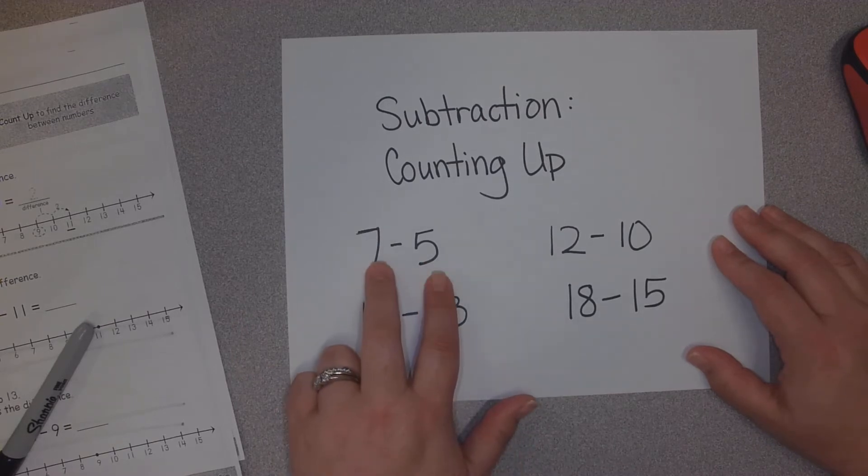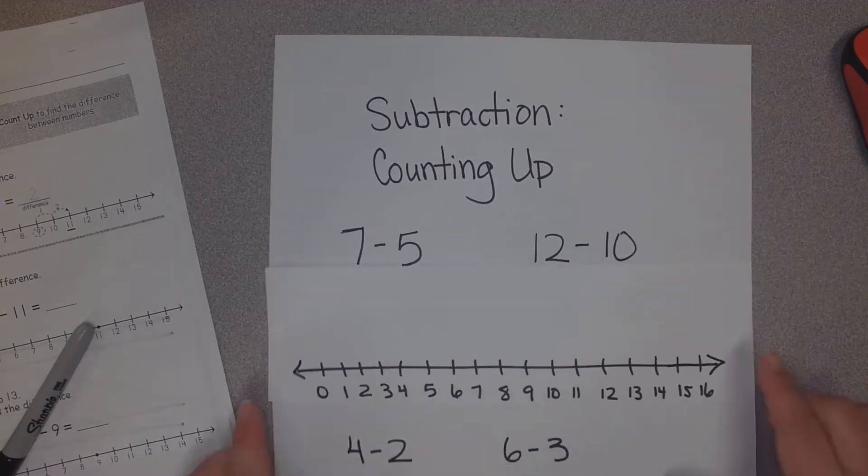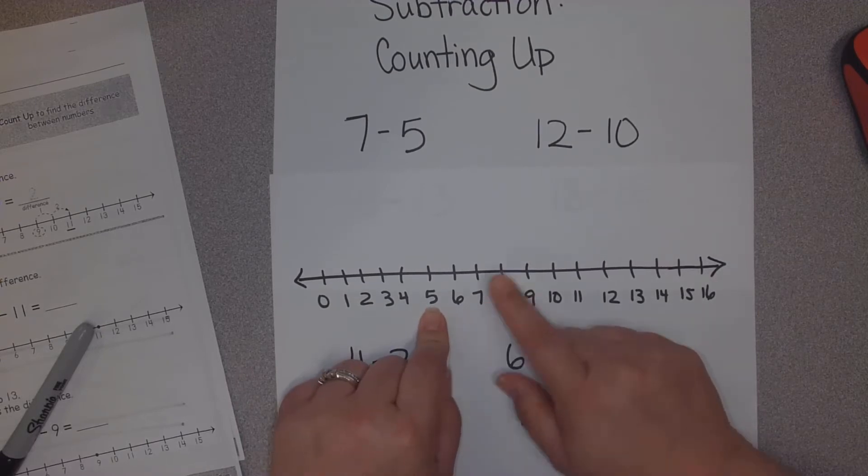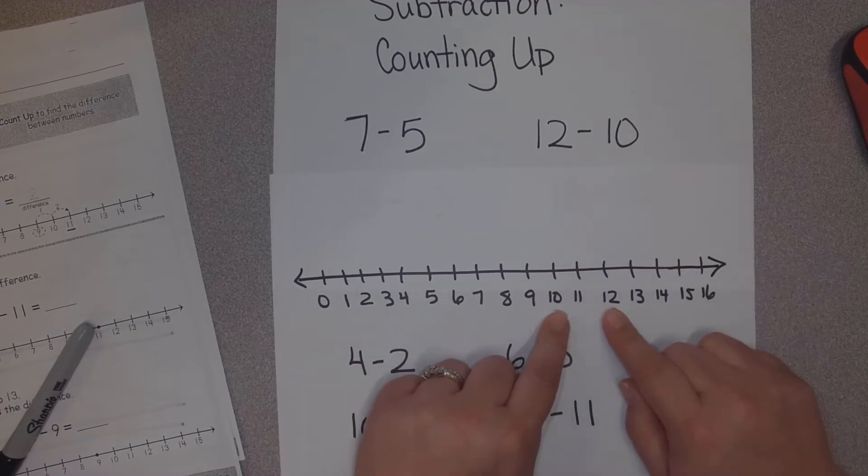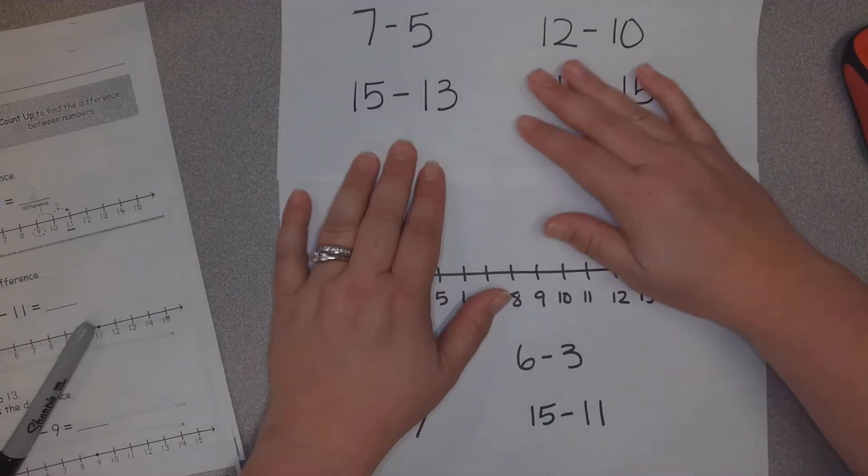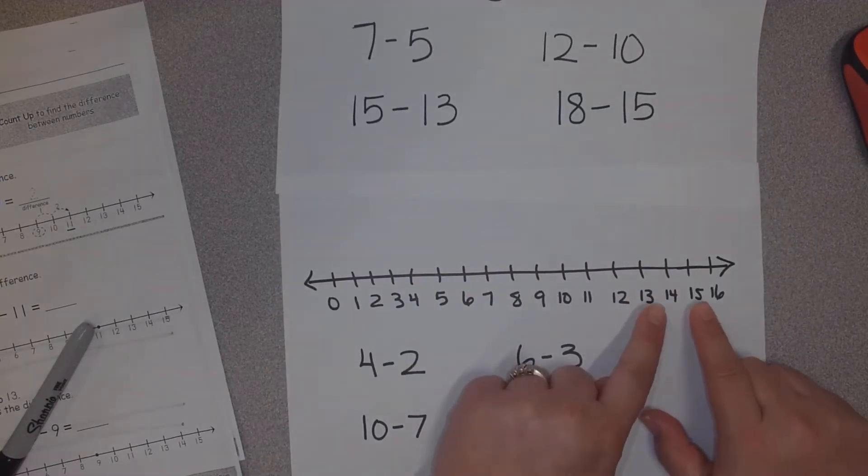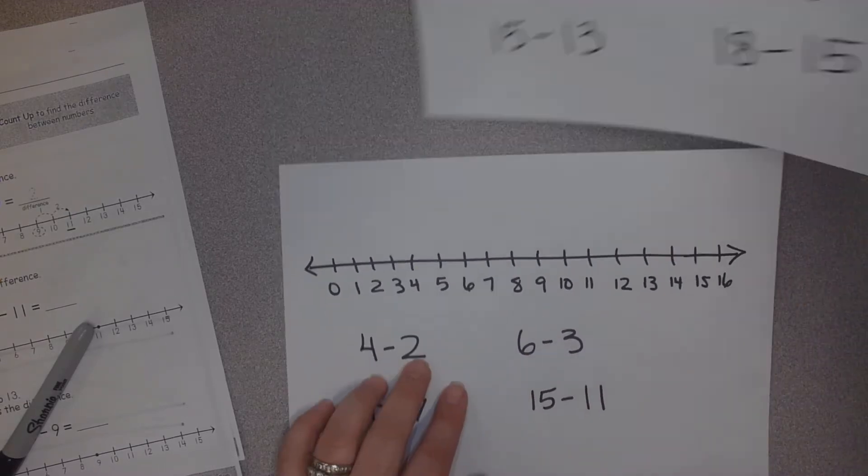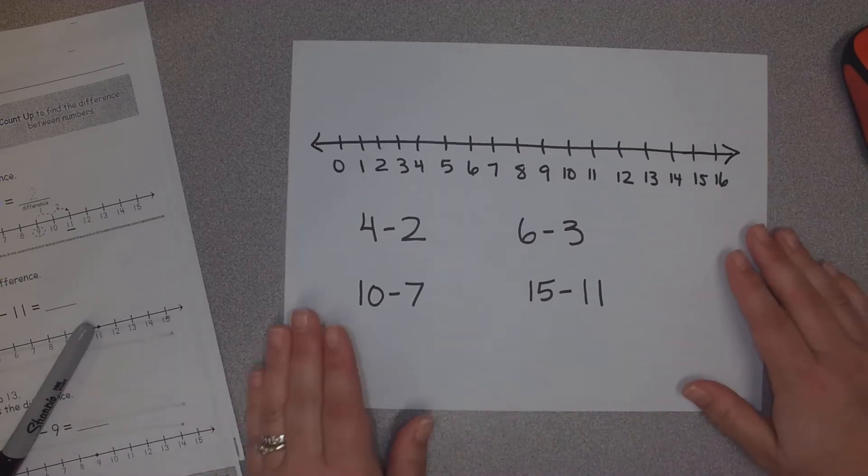If you notice 7 and 5, if you look at them on a number line, 7 and 5 are close together. So this is a good strategy for this. 12 minus 10, 12 and 10 are close together on the number line. 15 and 13, they are close together on the number line. 18, which would be off of here, and 15, that would be close on a number line as well. So those are the kind of problems we're going to look at today.